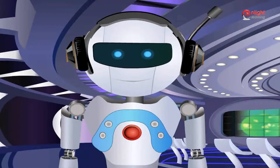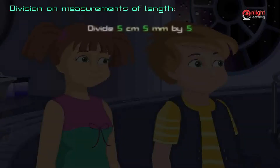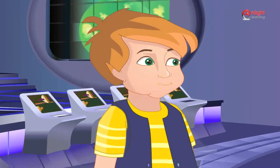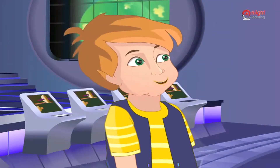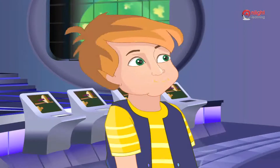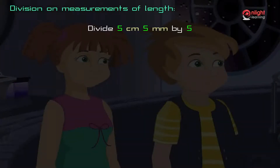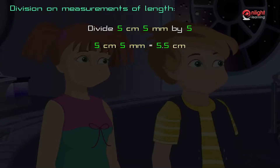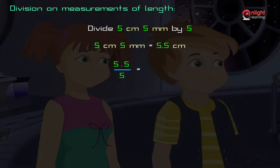Why don't you solve some problems to understand this concept better? Divide 5 centimeters 5 millimeters by 5. Let us start solving by expressing quantities using the same unit, here in centimeters. 5 centimeters 5 millimeters is equal to 5.5 centimeters. As all the measurements are expressed using the same units, we can divide them. 5.5 ÷ 5 = 1.1 centimeters.